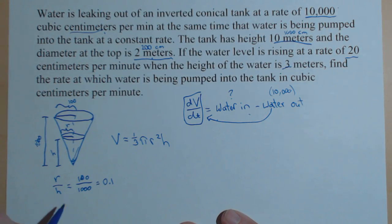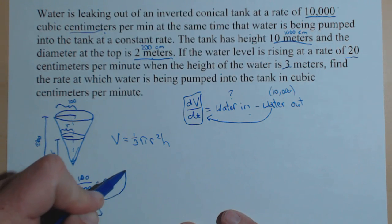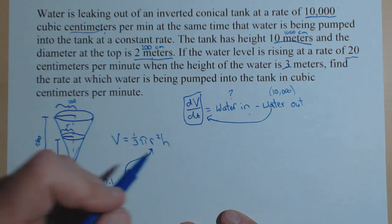This is something I can solve for r. r equals 0.1 h. And now, this can be plugged in for my r here to get that in terms of a single variable.